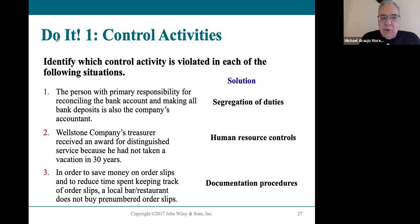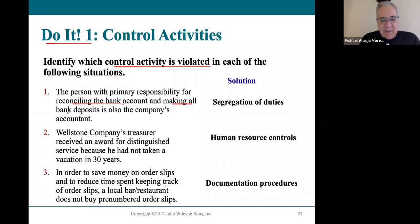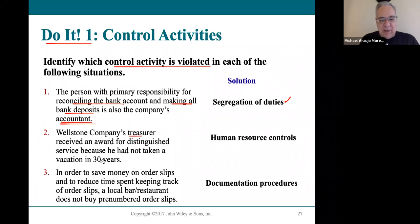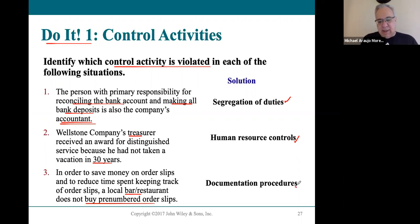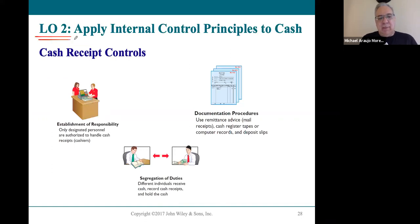The do-it exercises ask you to identify which control activity was violated. For example: a person who reconciles the bank account also makes all bank deposits and keeps all the books — that's ripe for fraud. A treasurer who received an award for not taking a vacation in 30 years is a red flag. A bar-restaurant that didn't buy pre-numbered order documents to save money created a documentation problem. Documentation procedures would help that significantly.